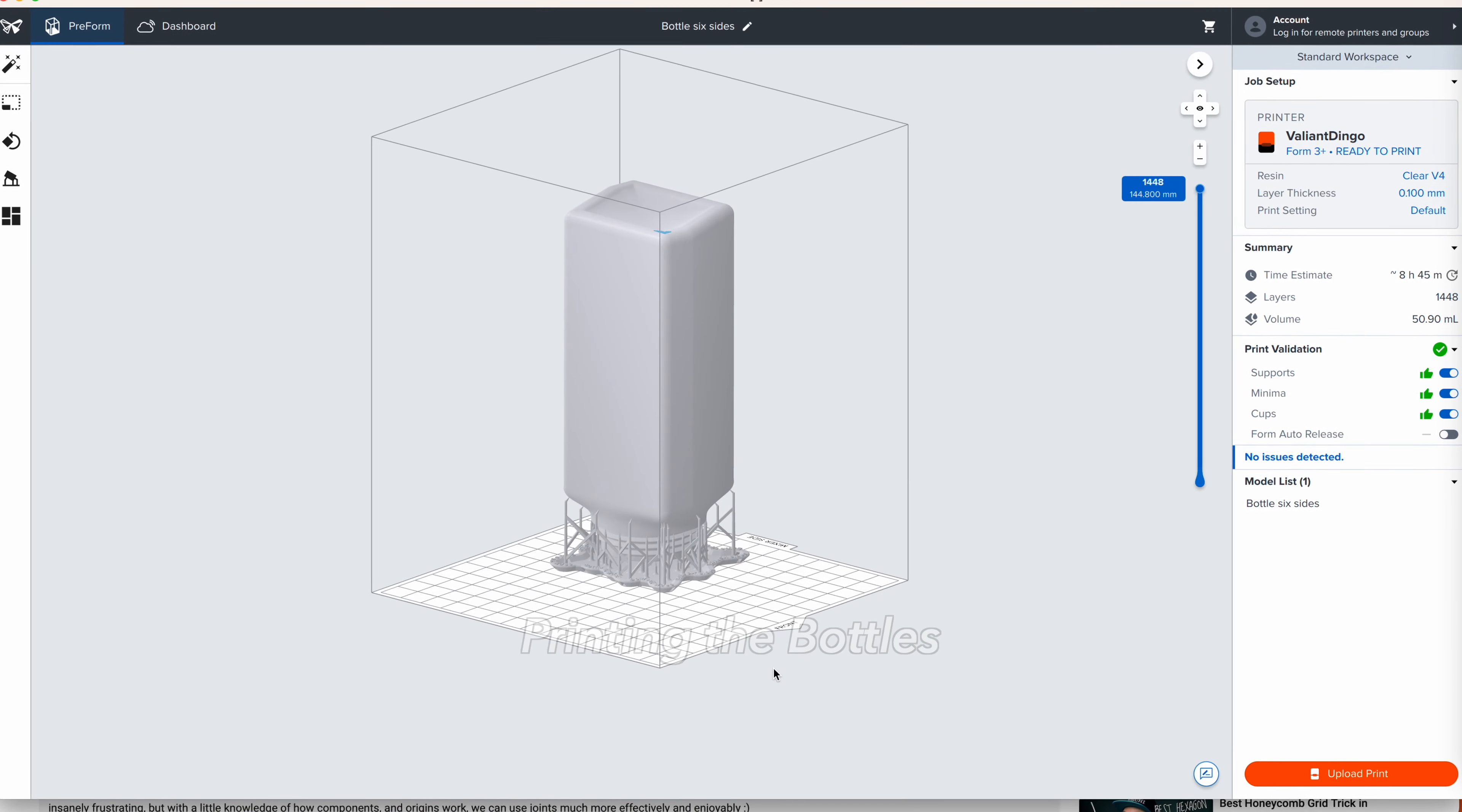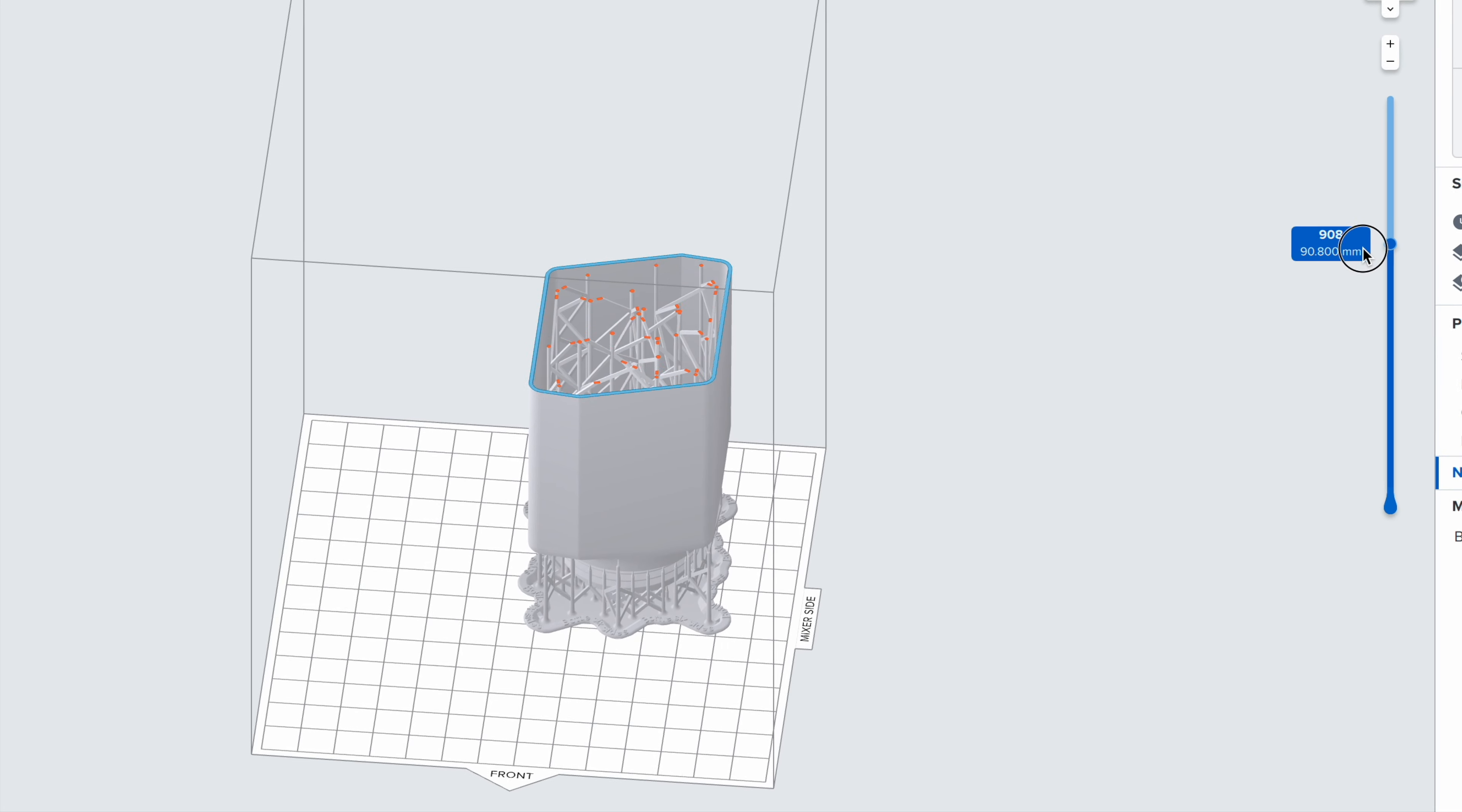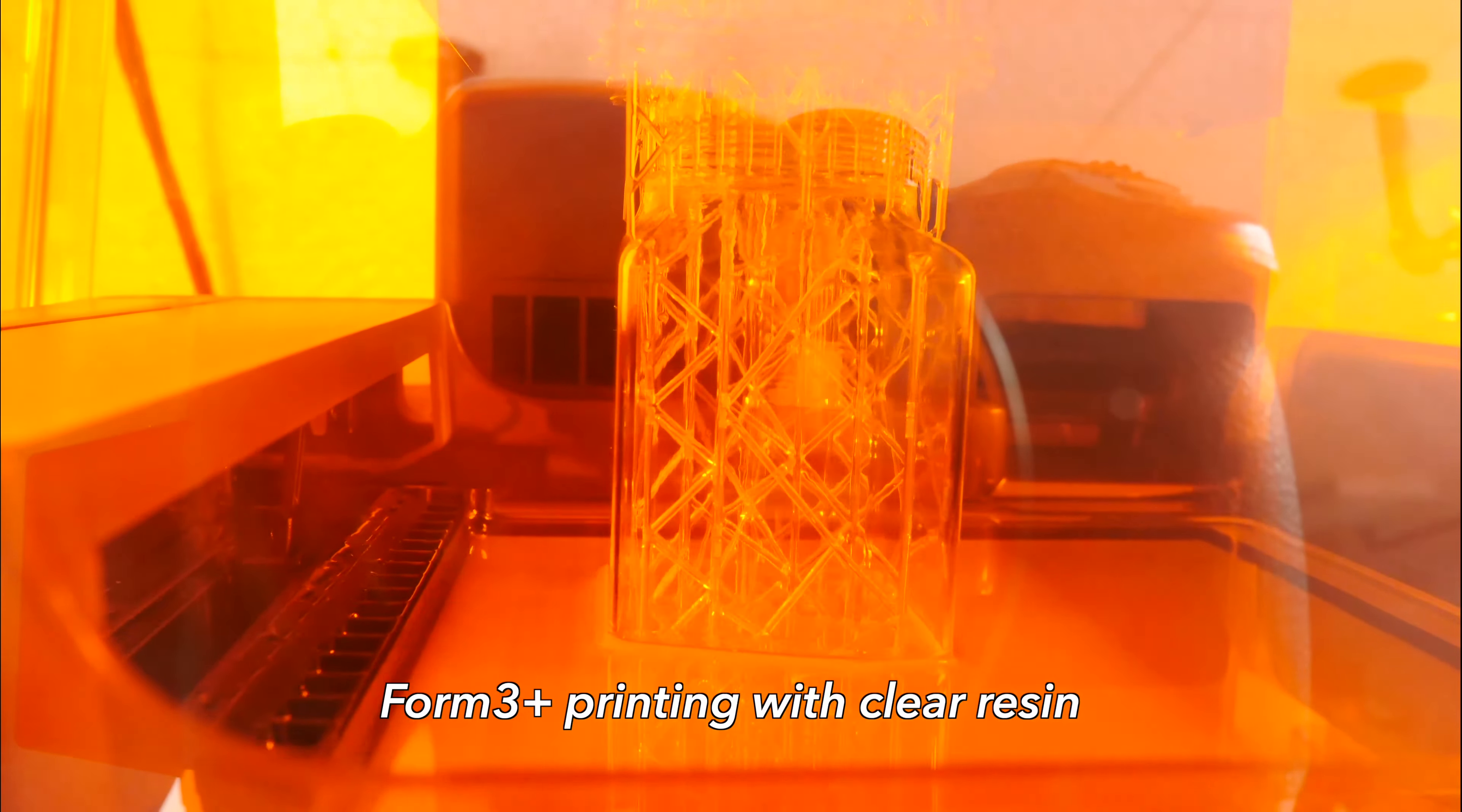Let's take the data and pull it into Formlabs software, Preform. This slices up the bottle, creates all the supports, and then it's off to the printer to be printed. Here it is, time lapse of the bottle being printed in the Form 3 Plus using the clear resin. Looks nice.